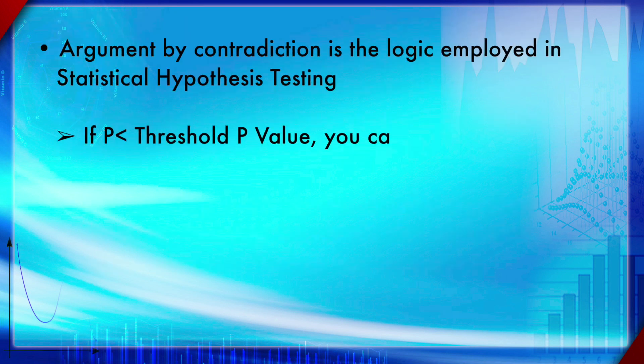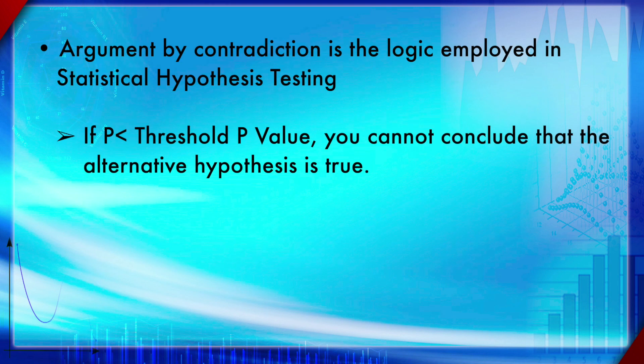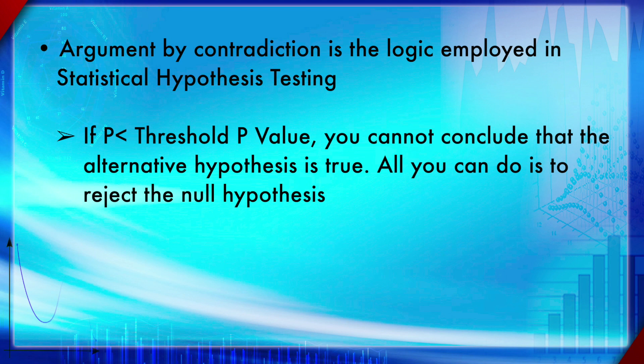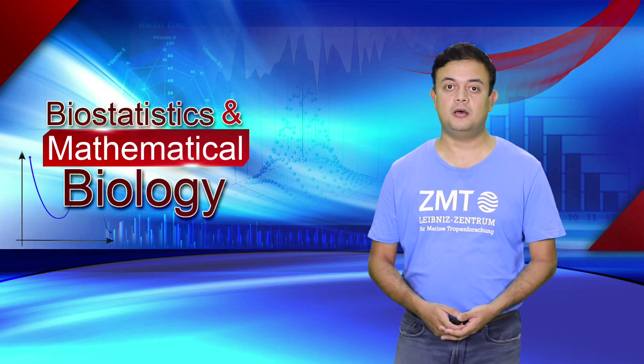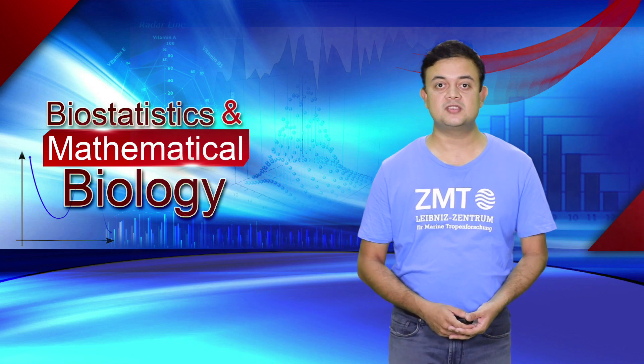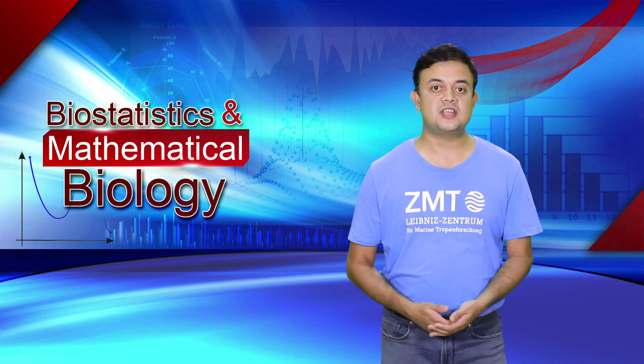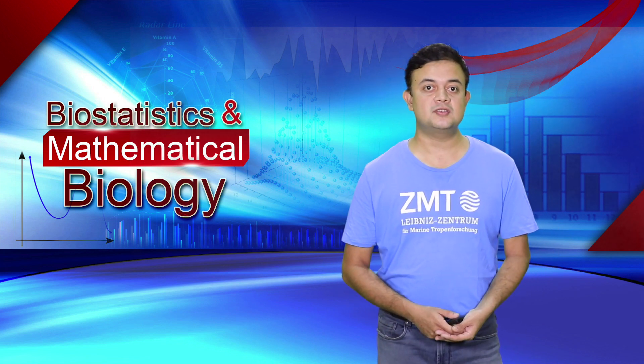Argument by contradiction is the logic employed in statistical hypothesis testing. If the p-value is less than the threshold, you cannot conclude the alternative hypothesis is true — all you can do is reject the null hypothesis. That is the only probabilistic conclusion possible from statistical hypothesis testing.